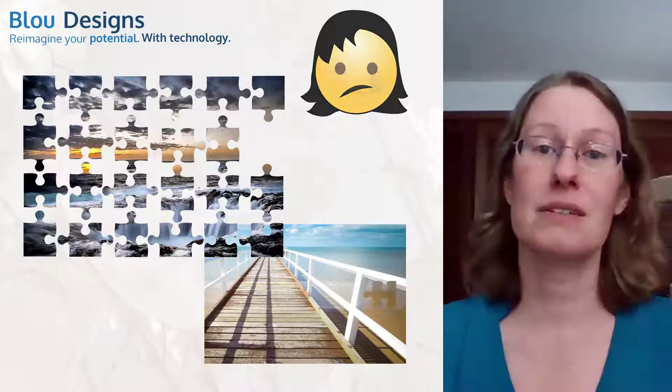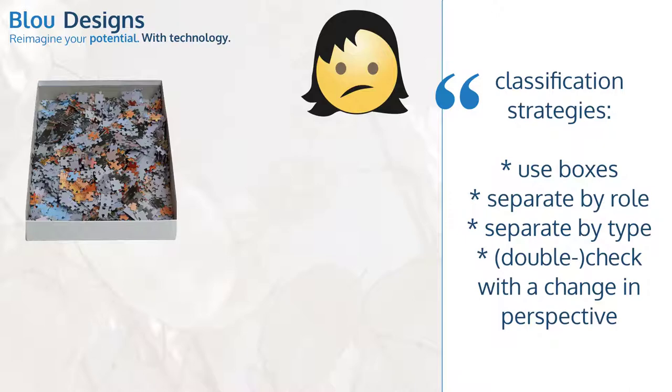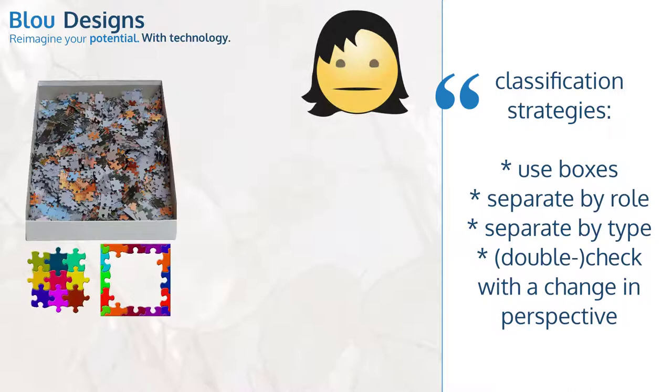To prevent these types of quagmires, we use classification strategies. We keep all of the pieces of a single puzzle in that puzzle's box. When we're ready to work on the puzzle, we separate pieces into edge pieces and inside pieces. That is, we separate by role.